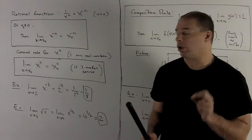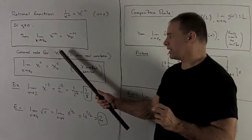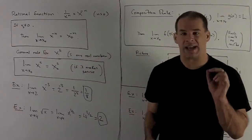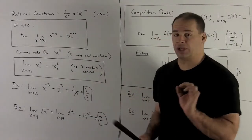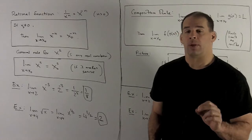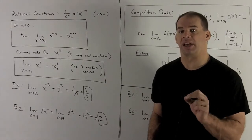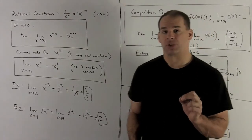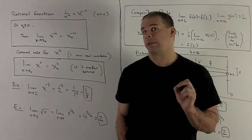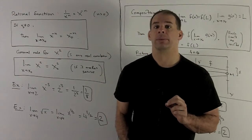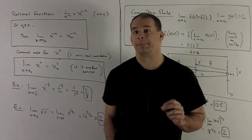In general, if I take x to the s, where s is any real number, we're still going to have the evaluation rule. The only hitch is you have to make sure what's coming out makes sense — no square roots of negative numbers and no dividing by zero. If you get a number otherwise, then that's going to be your limit.